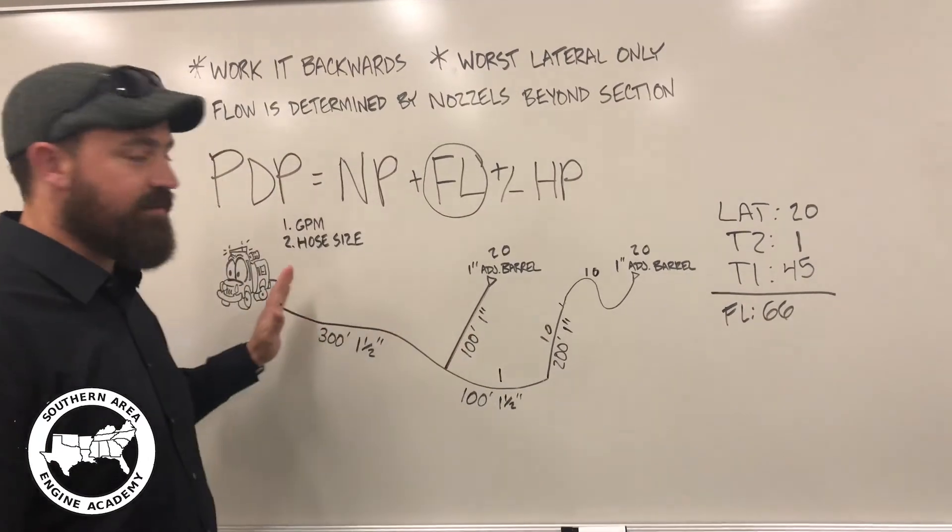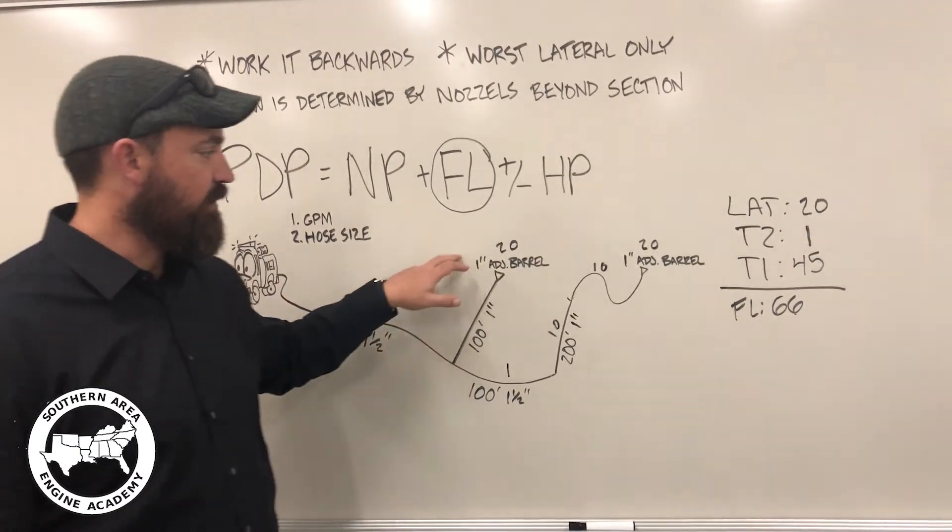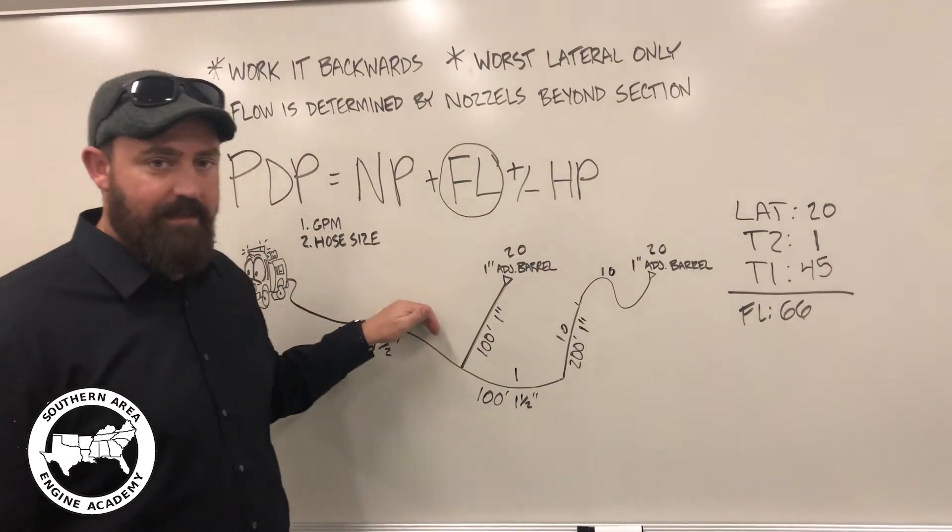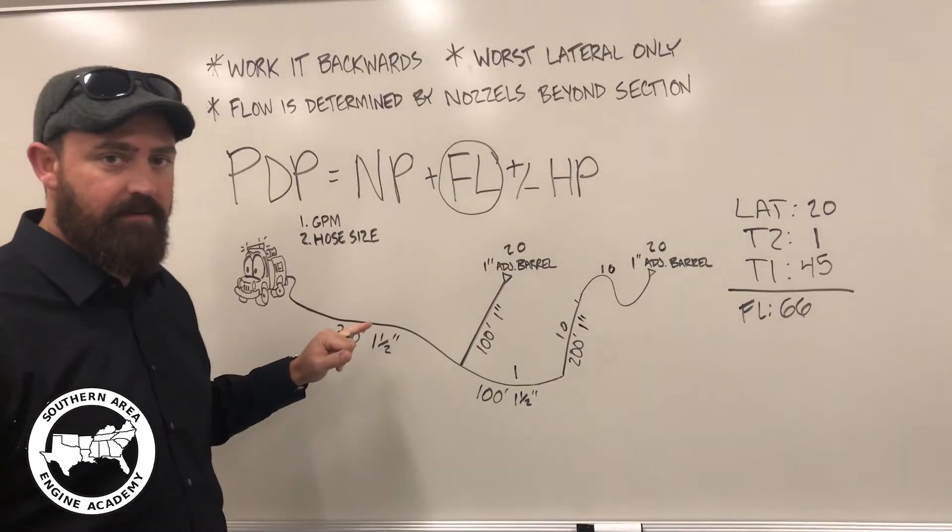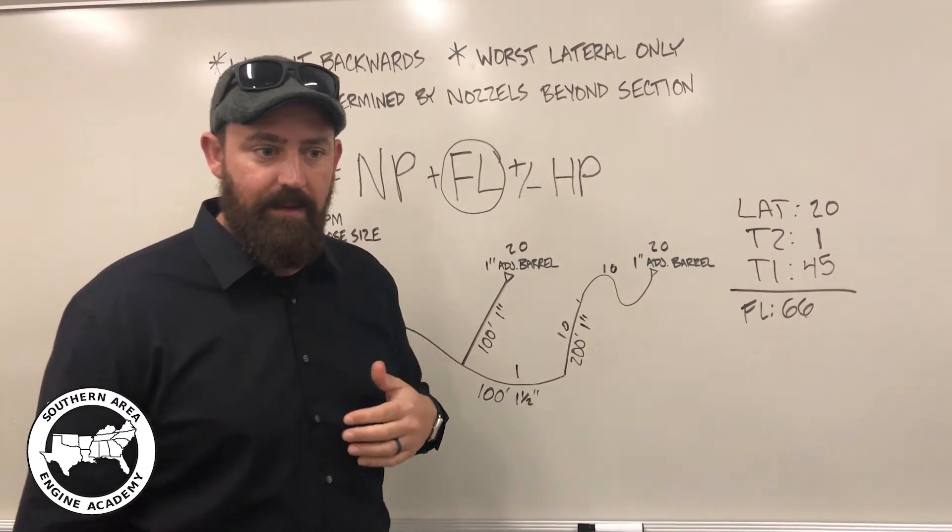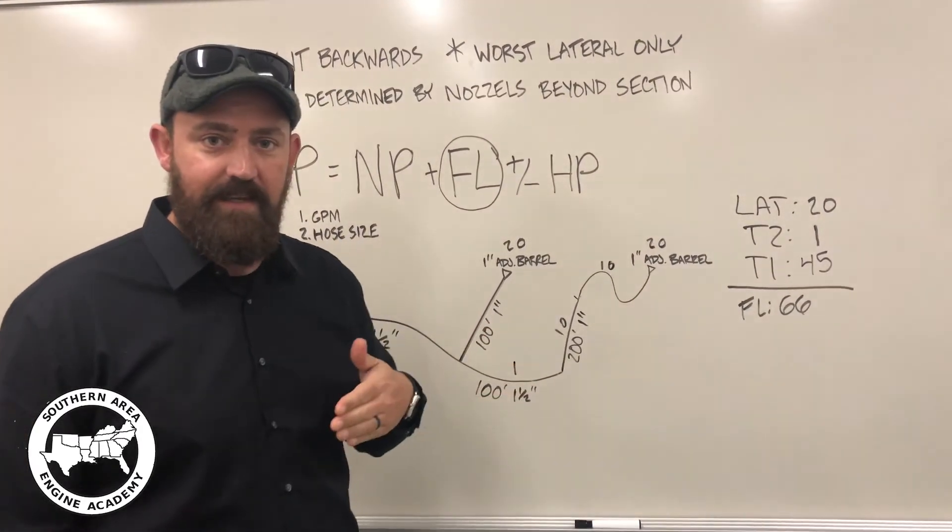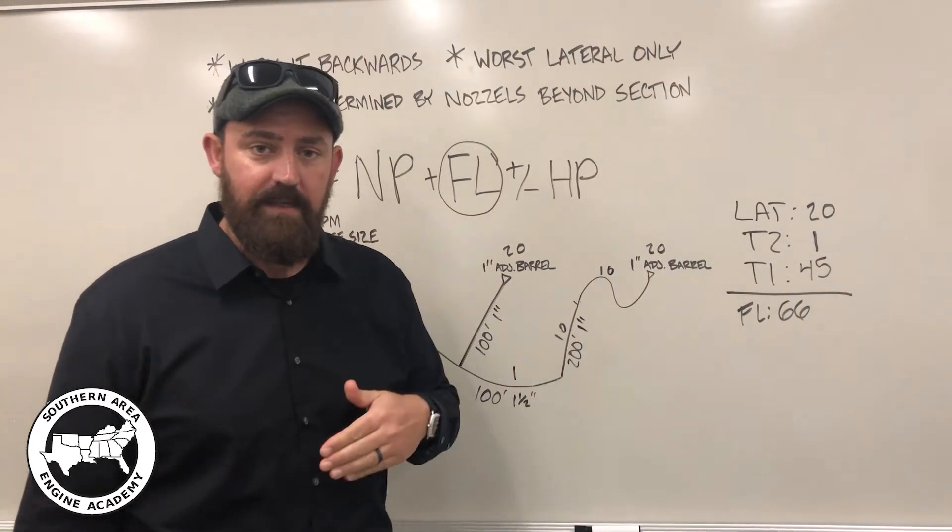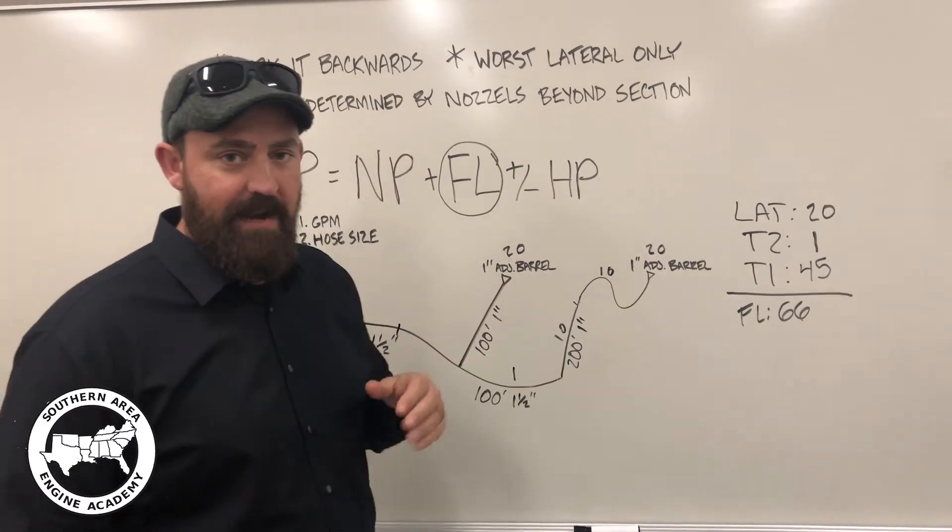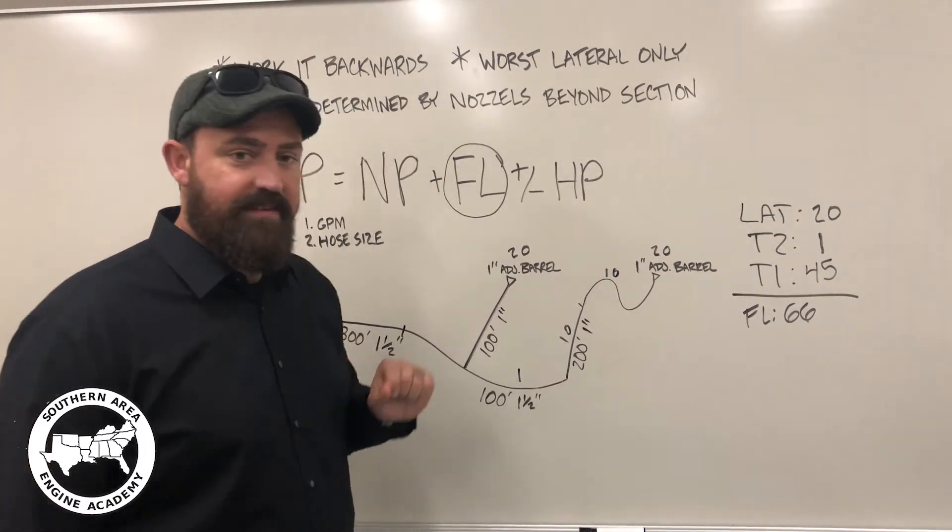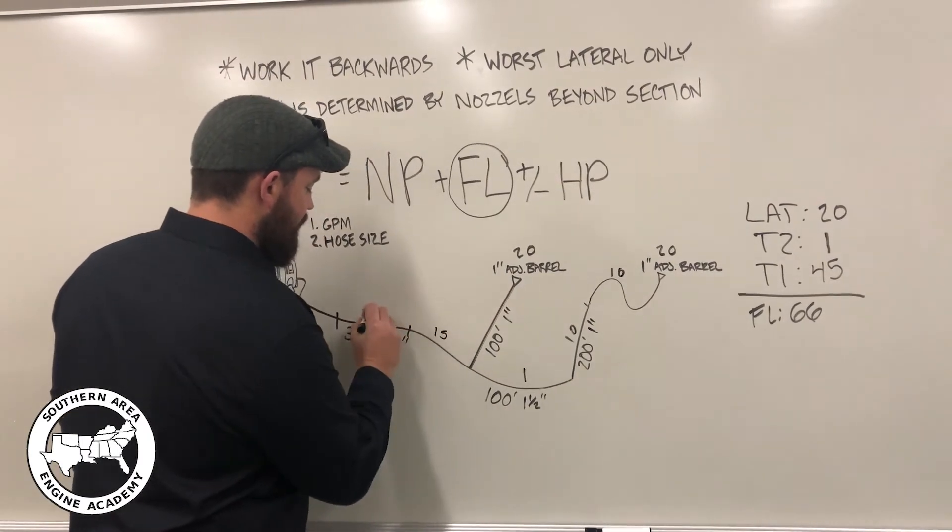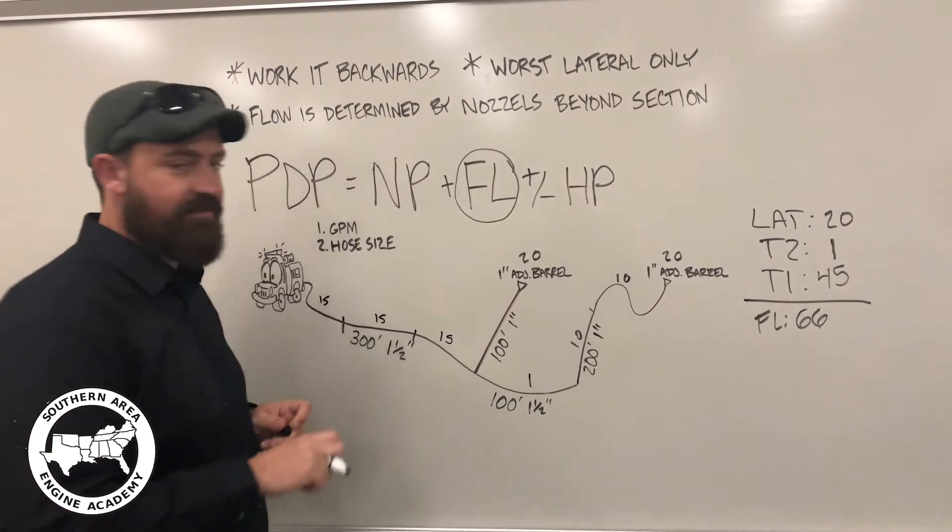Now, as we got back to trunk one, trunk one has to supply both these nozzles. So, that's 40 gallons per minute that has to go through that piece of hose. In our IRPG, there was not a number for 40, it jumped from 30 to 60. So for the sake of the class, we're going to round it up to the higher number, the 60 GPM, so that everybody comes to the same answer. And at 60 GPM, inch-and-a-half hose was losing 15 pounds of friction loss per section.